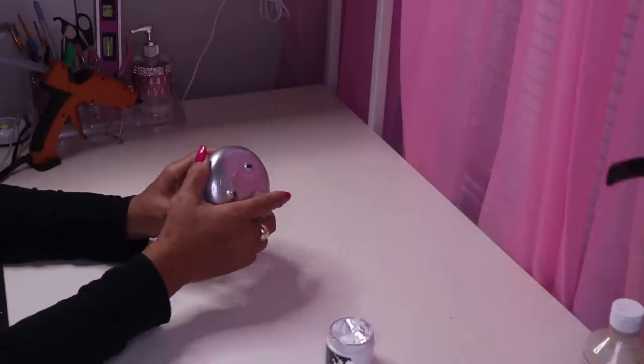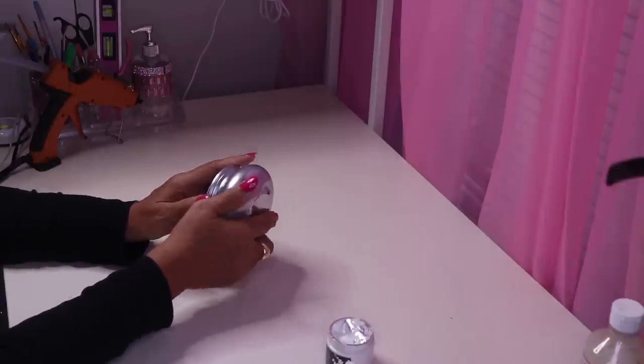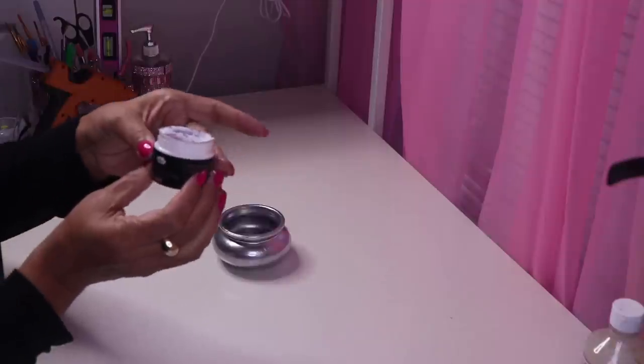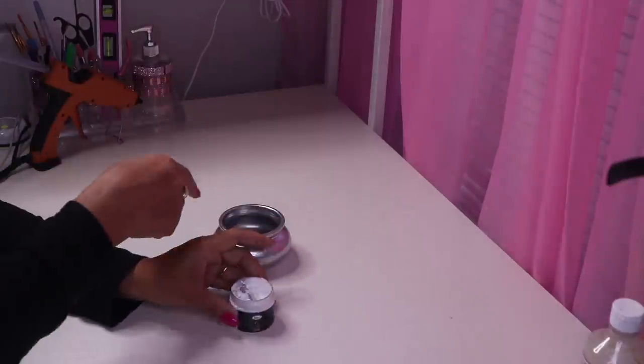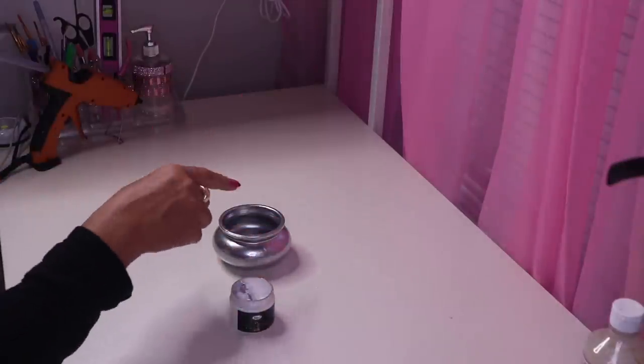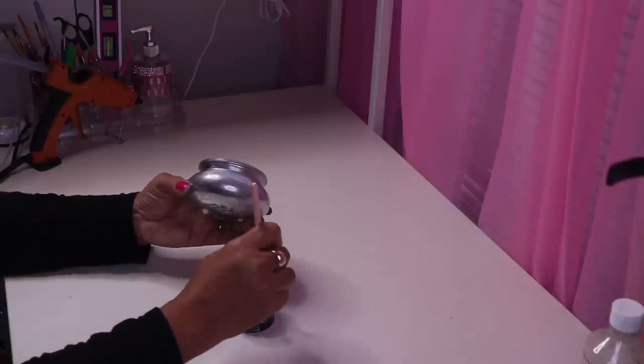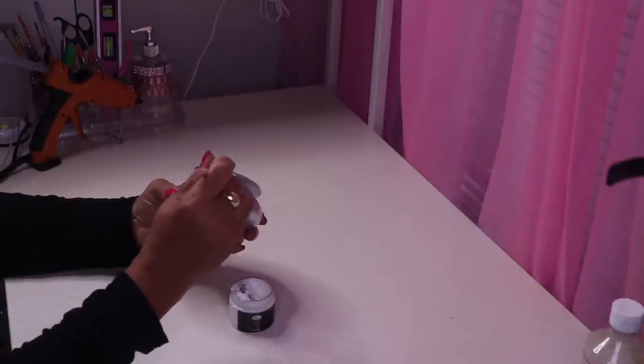So next I'm going to cover this with silver leaf and I'm going to do the same thing with the bowl and the four balls. Here I have some silver leaf adhesive and I'm just going to brush some onto my candle holder. Just brush on a thin amount, you don't need much.